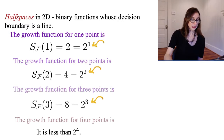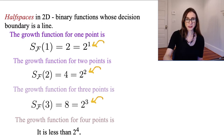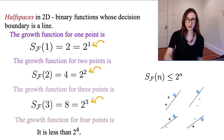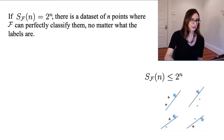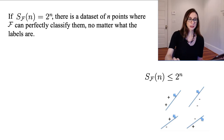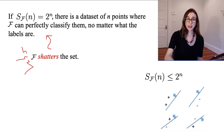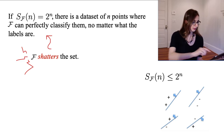I'm going to go back to the case where the growth function is actually 2^n — which is with two points in half spaces in two dimensions. For every possible labeling we want to give these points, we can find a classifier for it. This is called shattering. If the growth function is 2^n, there is a data set of n points where f can perfectly classify them no matter what the labels are — we say f shatters that set.